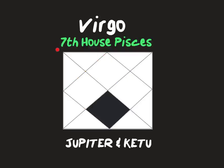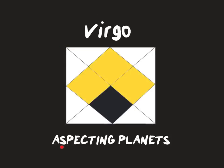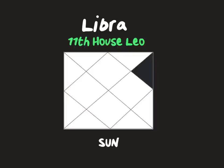For Virgo ascendant, your Baddaka house is the 7th house of Pisces. Any planets in Pisces become Baddaka. Take note of Jupiter and Ketu — they are the lords of your Baddaka house. So where has Jupiter gone? Where is Ketu? Those houses become impacted, and any conjunctions to Jupiter or Ketu also have a Baddaka effect. Note aspecting planets from the rising sign Virgo, the 4th house Sagittarius, and the 10th house Gemini — any planets there will have a Baddaka effect also.